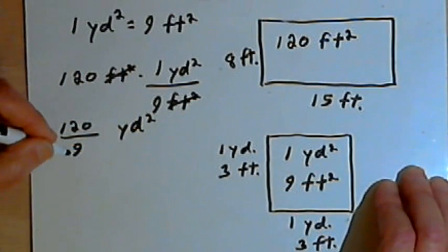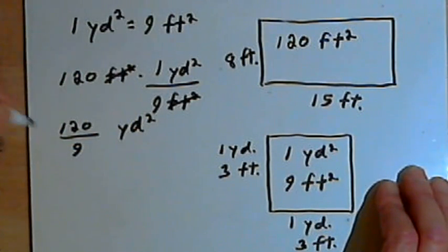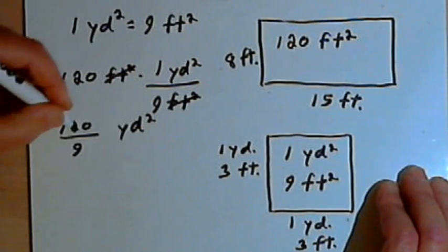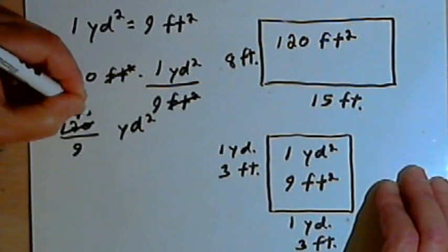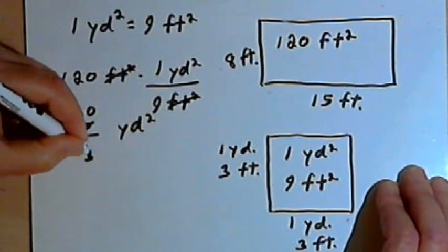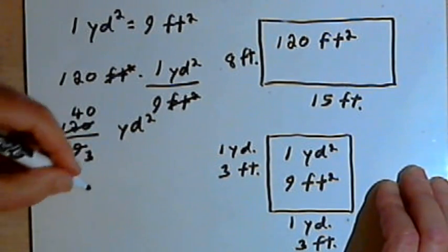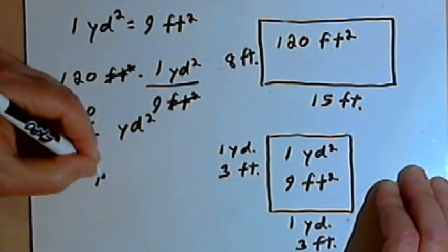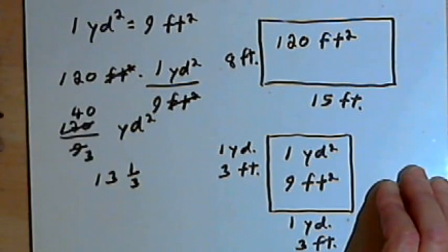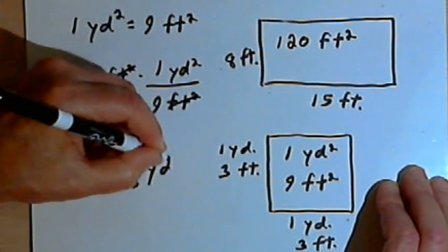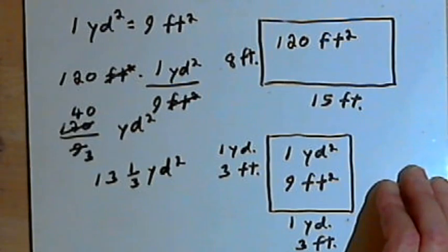Now I'll simplify this fraction. 120 and 9 are both divisible by 3, so that's going to be 40 over 3. I'll turn that into a mixed number, which is 13 and one-third square yards.